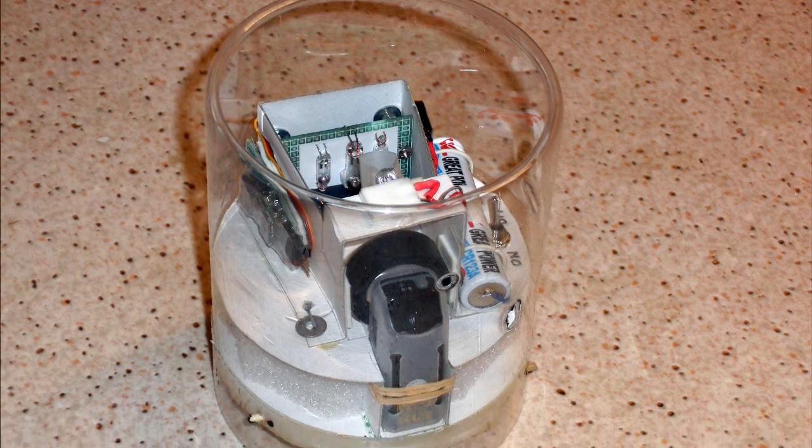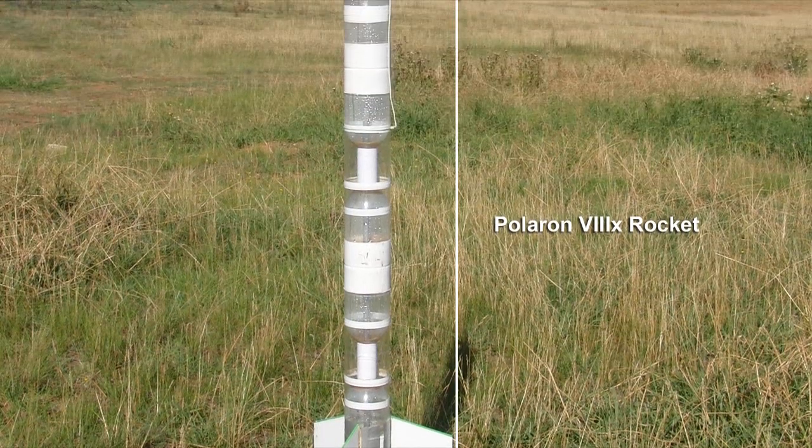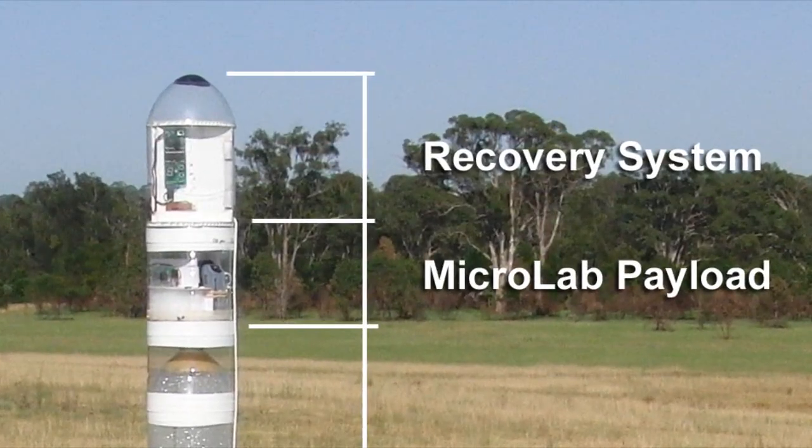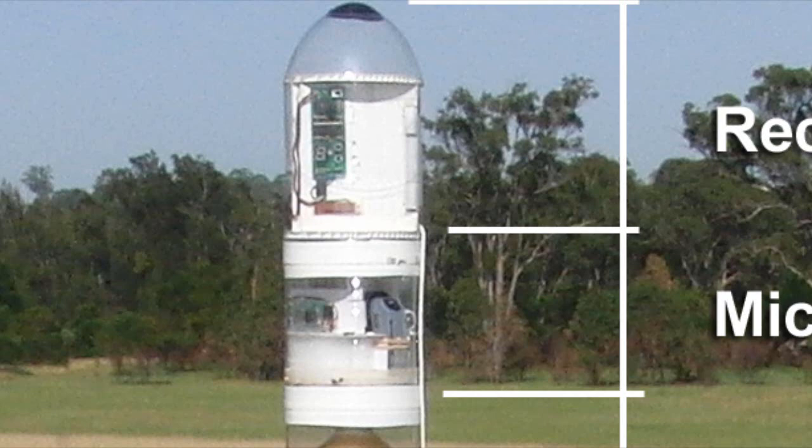Here it is mounted in the payload bay. The microlab is mounted on top of a 9.8 litre rocket and on top of that is the recovery system. The recovery system uses an electronic timer which is configured to open the parachute a little past apogee so that we can see what happens to the payload during apogee.